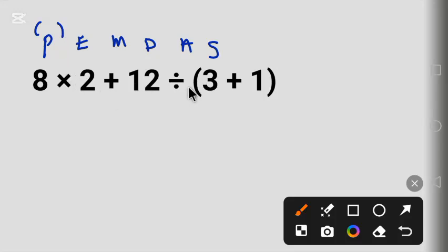We bring down this 8 times 2 plus this 12 divide by (3 plus 1) is 4. Next in the order of operation is exponent, E. Exponent is something like this, 2 square.